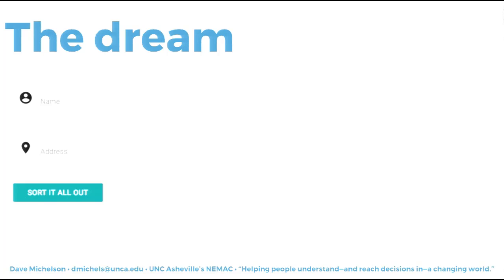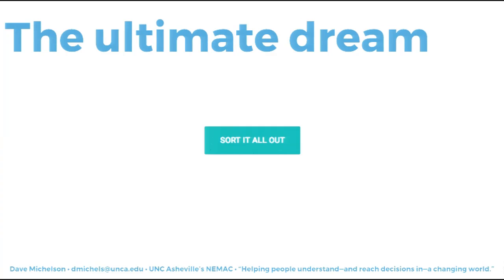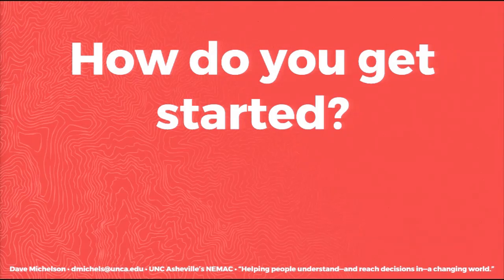When users come to your sites, especially mapping sites, most people's dream when they come to any website where they're trying to get information is to type in their name, their address, and then hit a button that says 'sort it all out.' Really, what they want is just that button. If you could do that, you've got it — but you'd have no information about what you're sorting.